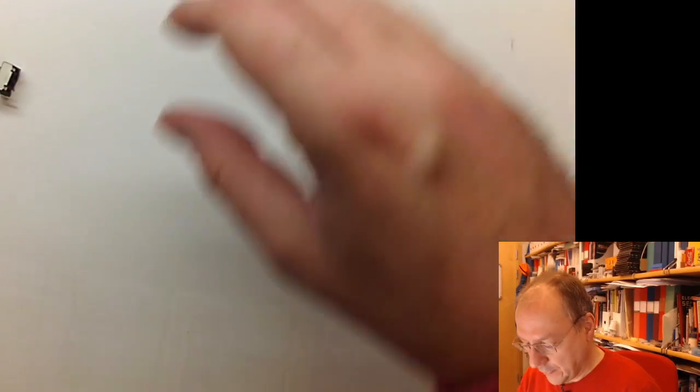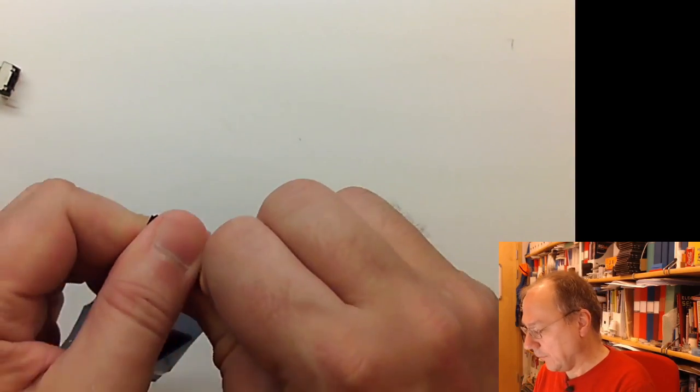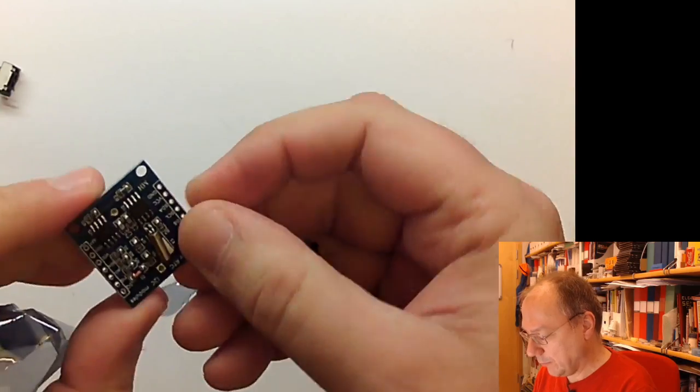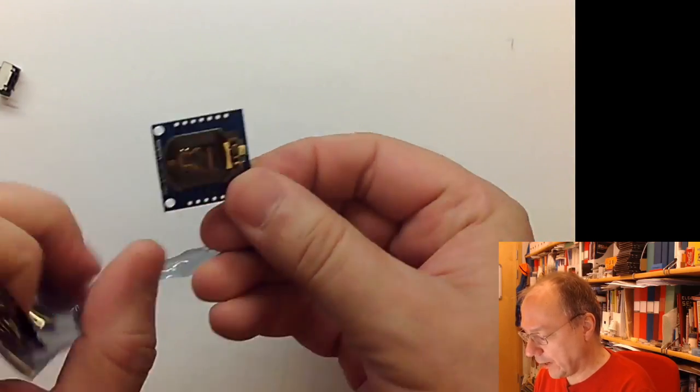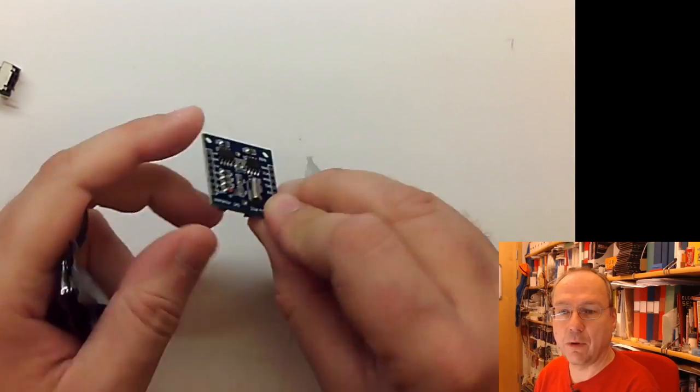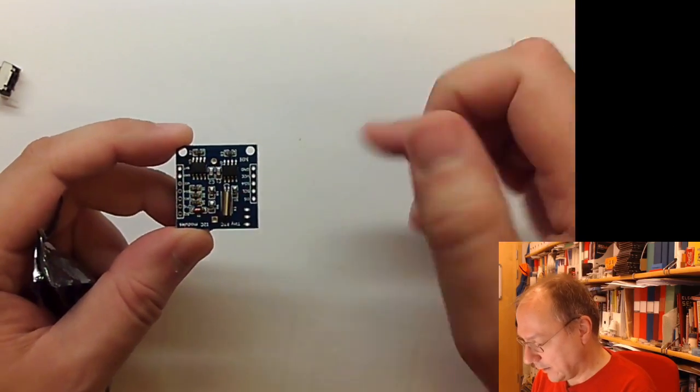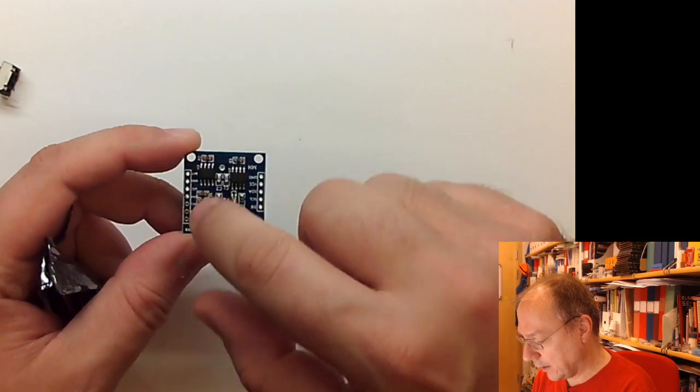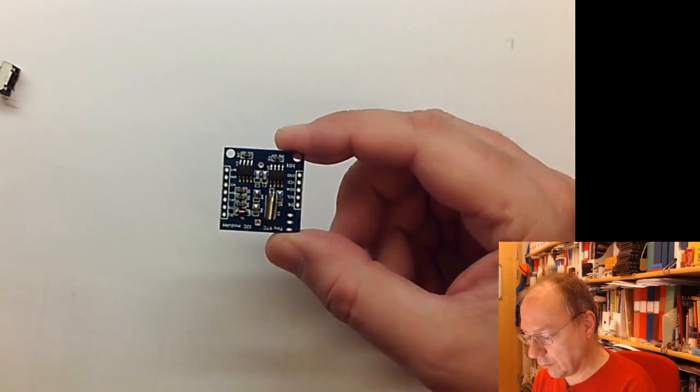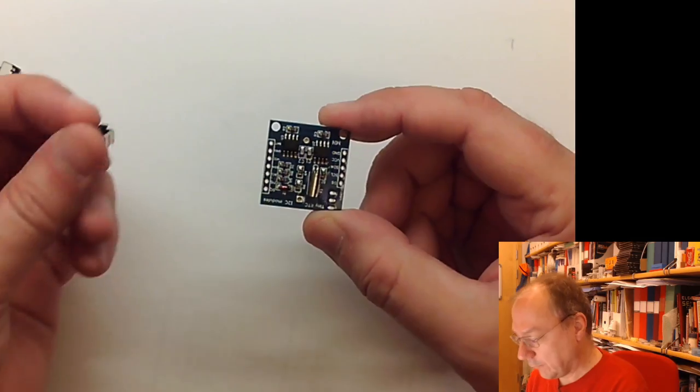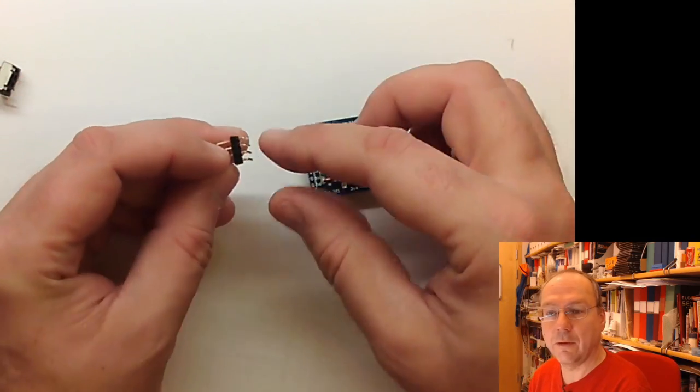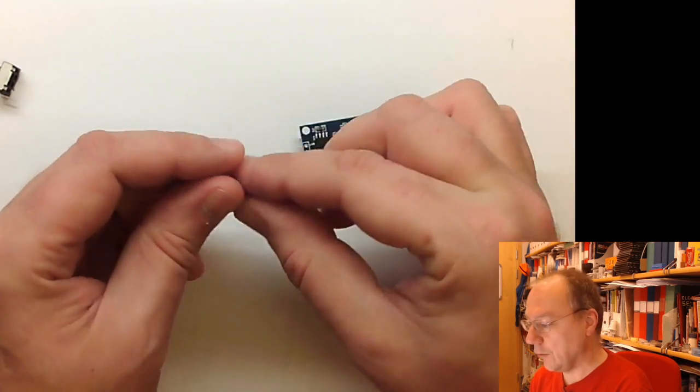Then we have the real-time clock chip or it's a module actually where there goes a battery on one side and then there's two chips on the other side and we have these contacts on the side which are not breadboard compatible so what I have to do here is to solder these pins onto it.